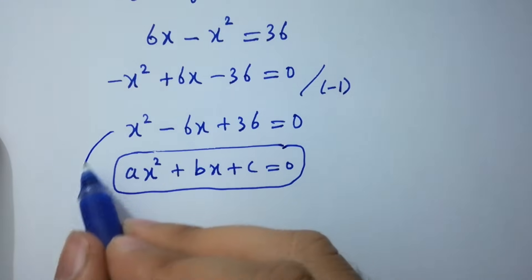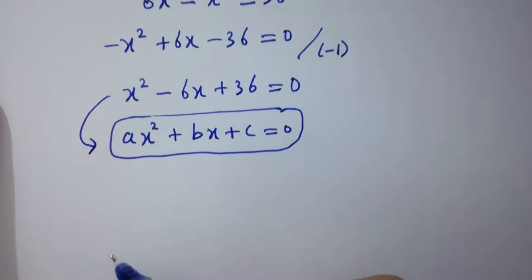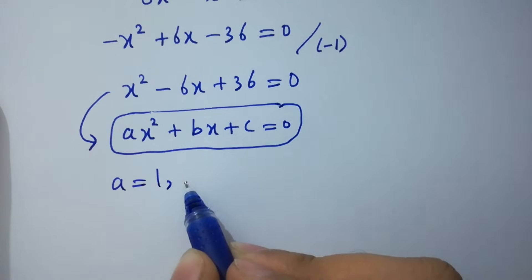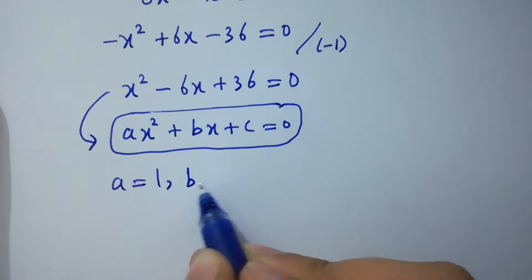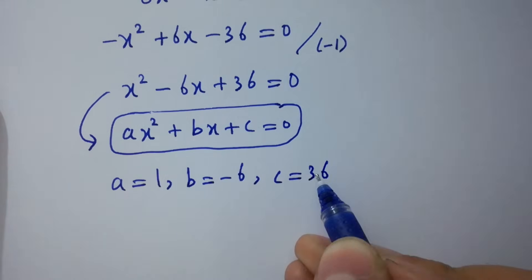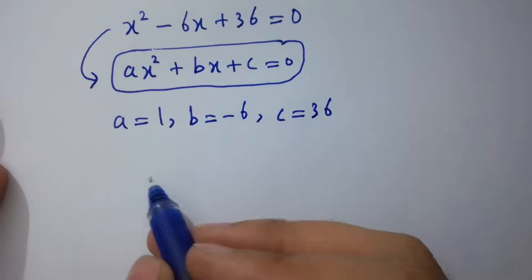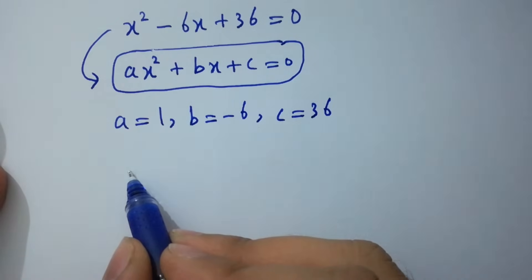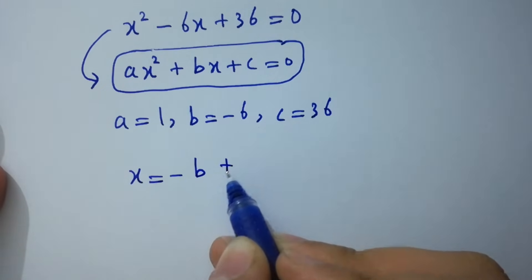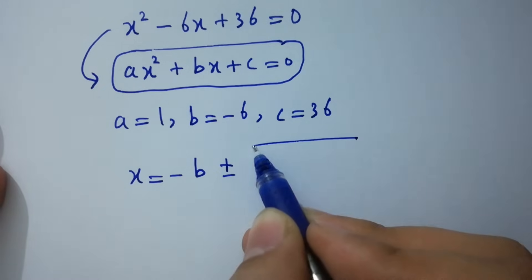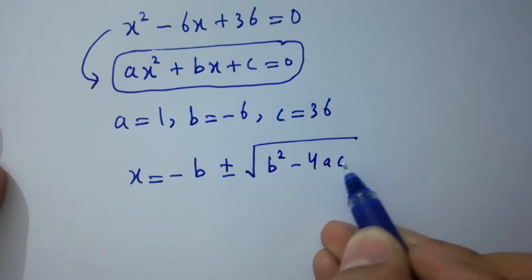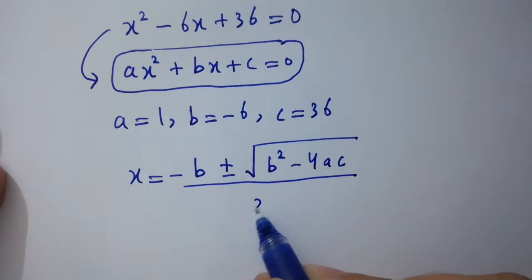By comparing, we have a equals 1, b equals negative 6, and c equals 36. Applying the quadratic formula: x equals negative b plus or minus the square root of b squared minus 4ac, all over 2a.